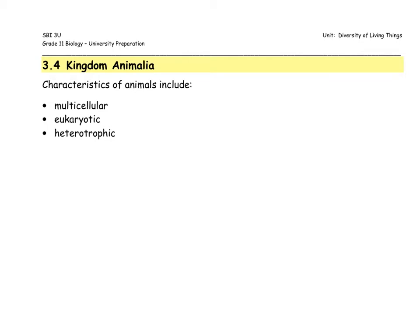Heterotrophic — all organisms belonging to Kingdom Animalia are not able to create their own food. They must consume other organisms in order to sustain themselves and gain energy. All organisms in Kingdom Animalia also lack cell walls; we only have a cell membrane. You may remember when we looked at plant and animal cells under the microscope — the plant cells very clearly had a cell wall, but the animal cells did not. So no cell walls in any animal cell.